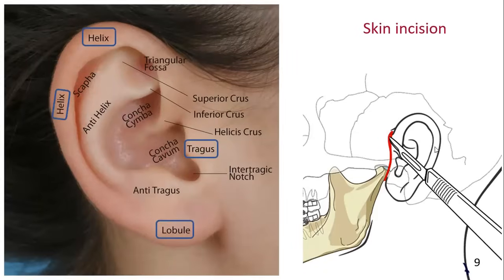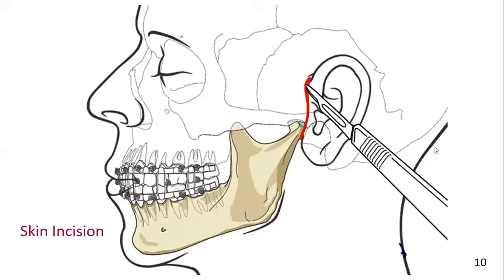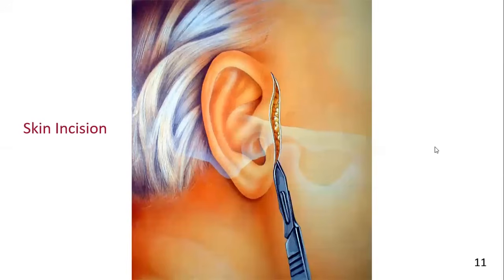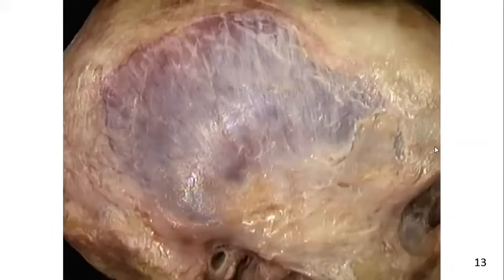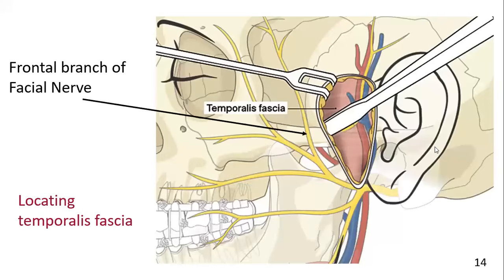Make the incision in the pre-auricular skin crease from the level of the helix above the tragus to the level of the lobule. Here you can see the initial incision made in the pre-auricular skin fold. Carry the incision through the skin and subcutaneous tissue to the depth of the temporalis fascia. The temporalis fascia is a glistening white tissue layer that is best appreciated in the incision's superior portion.